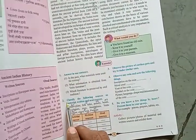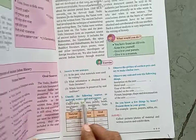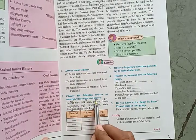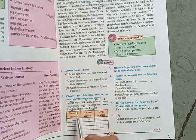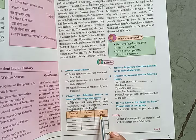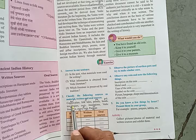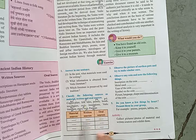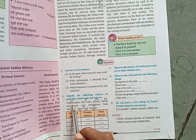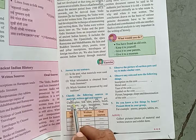Now question number 2: classify the following sources as material, written, and oral sources. Three columns are given — material sources, written sources, and oral sources. You have to divide these sources into these three categories. First, copper plate is a written source.